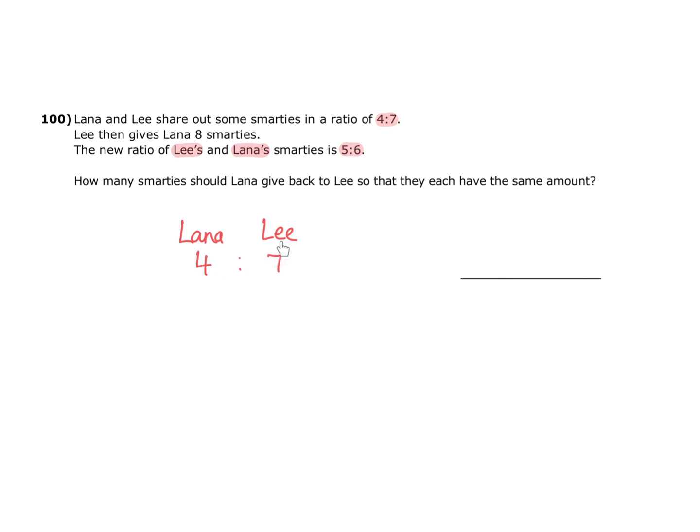But if we keep Lana to Leigh this way round, that ratio would in fact be 6 to 5. Pay close attention to the way the names are written. We start with Lana and Leigh and then we move to Leigh and Lana. So you can switch the numbers around in a ratio.